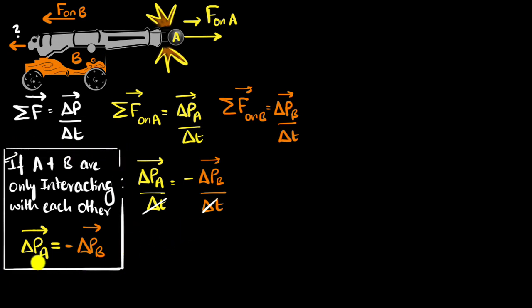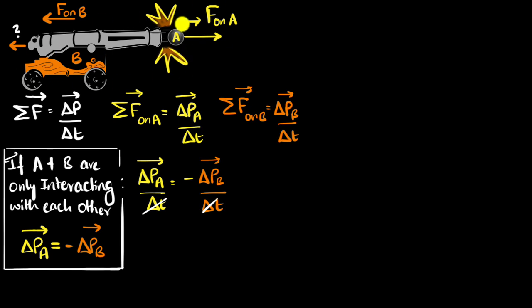So what is this telling us? This is saying that whatever momentum object A gains, object B will lose — I say lose because there's an opposite sign. Whatever this gains, it will lose the same amount of momentum. In other words, the total momentum of both the cannon and the ball together does not change after firing. The total momentum stays the same. This is called the principle of conservation of momentum.